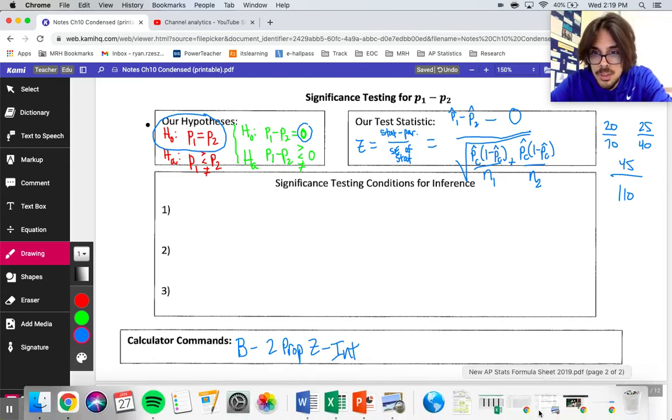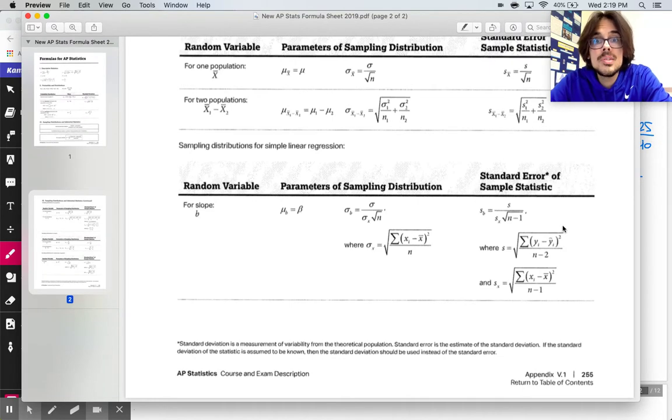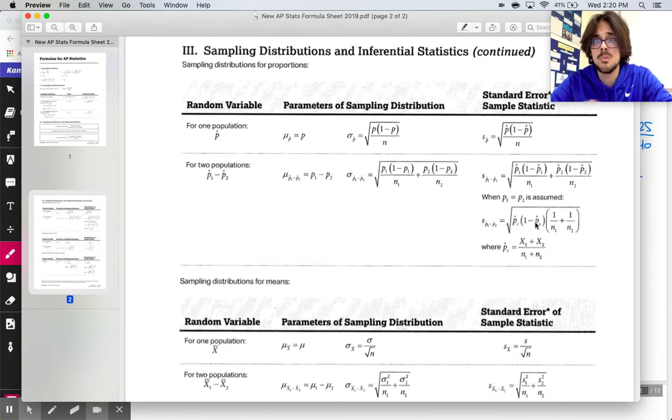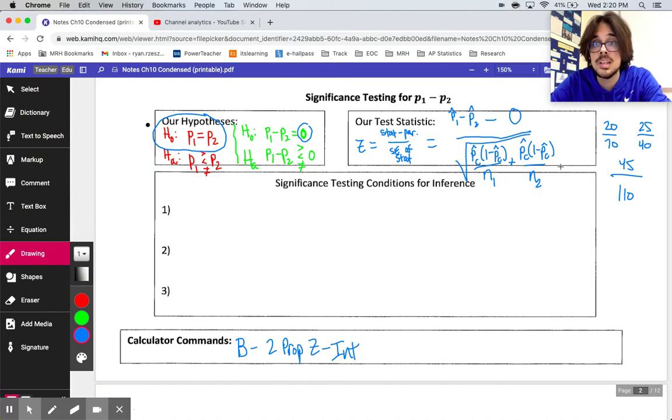When you look at your formula sheet, this formula sheet writes it in kind of a crazy way. When P1 equals P2 is assumed, that's what our significance test does. They ended up factoring out the numerator and pulled that out and left just the one over N1 plus one over N2. I don't love that it's written this way on your formula sheet. It seems to me like one extra step that you have to try to understand. You're going to want to avoid using this formula whenever you're able to. It's just tedious. This is going to be calculator time for the most part when we're actually evaluating and getting our verdict on our significance test.